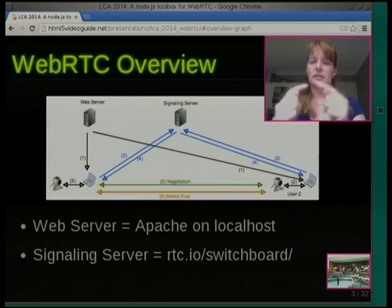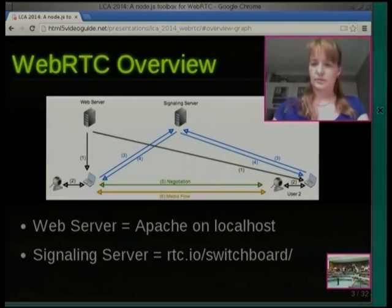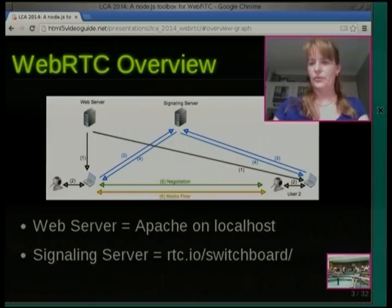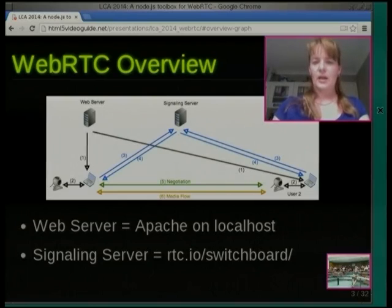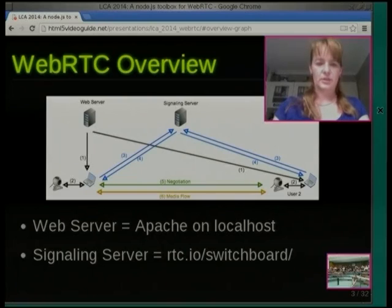Number four is the signaling server forwards those messages to each other. So now we know about each other and we can connect directly — that's number five. First we negotiate which codec to use, which video quality, whether it's video and audio or data only, which encryption we're using, et cetera. And once that negotiation has happened, it leads to the media so we can directly speak to each other.